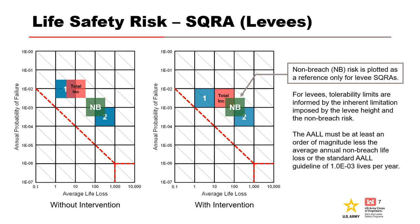Levee risk guidelines have evolved to consider the non-breach or background risk. The limits of tolerability are informed by the inherent limitation imposed by the levee's height and non-breach risk. If the incremental risk is at least one order of magnitude less than the background risk, then the risk could be tolerable. The average annual life loss must be at least an order of magnitude less than the average annual non-breach life loss, or it must be less than the standard guideline of 1×10⁻³ lives per year. Non-breach risk is plotted as a reference on this chart, but only for levee SQRAs.